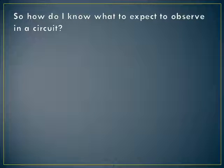The big goal in this video is to learn how to make some predictions about what you're expecting to see in the circuit, so we can see how the observable properties of the resistors and the wires in our circuit match up with the variables and relationships that we know. So how do you know what to expect to observe in a circuit?